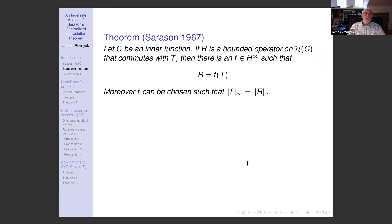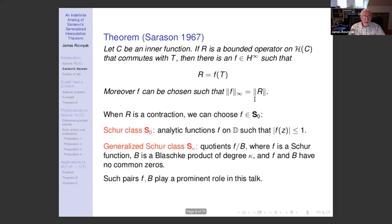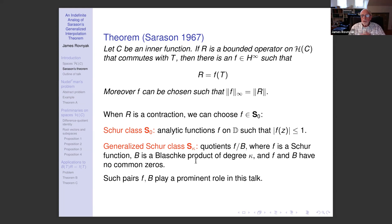Here is Sarason's generalized interpolation theorem. Let c be an inner function. If R is a bounded operator on h of c that commutes with T, then there is a function f in H∞ such that R = f(T). Moreover, f can be chosen such that the H∞ norm of f equals the operator bound of R. In particular, when R is a contraction, we can choose f to be a Schur function. The Schur class S₀ is the set of analytic functions defined and bounded by one on the unit disk. The generalized Schur class Sκ is the set of quotients f/b, where f is a Schur function, b is a Blaschke product of degree κ, and f and b have no common zeros. Pairs of this type will play a prominent role in the talk.